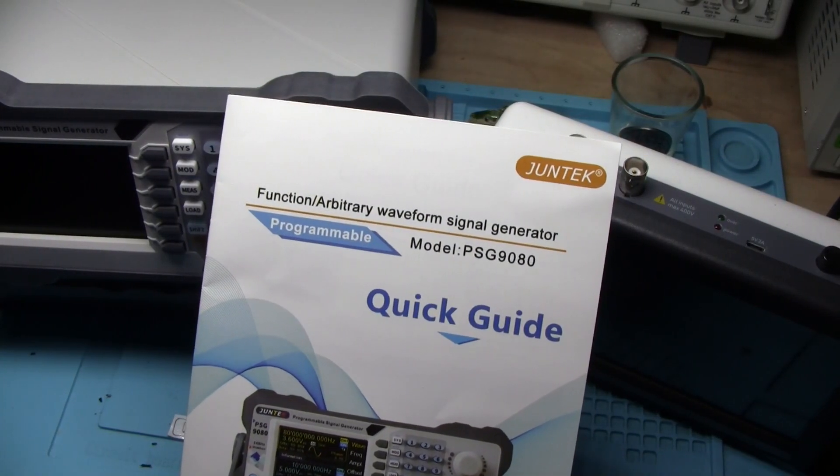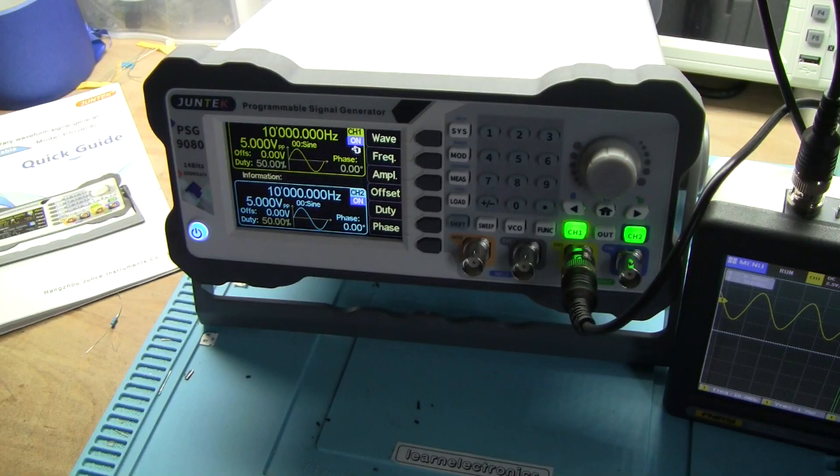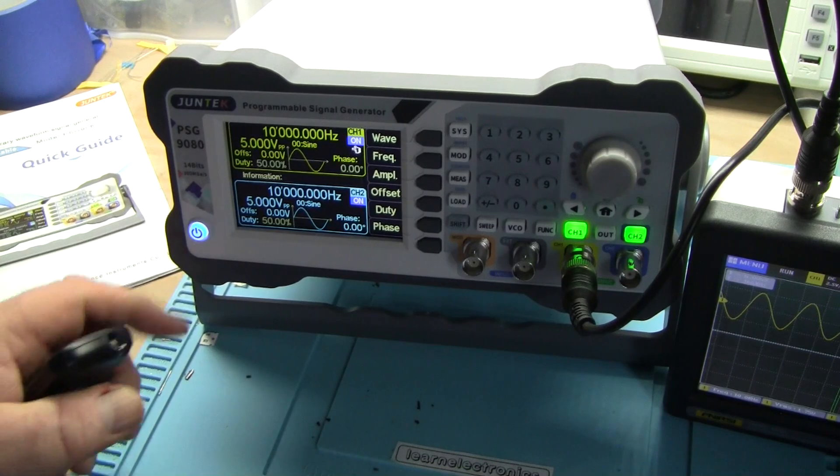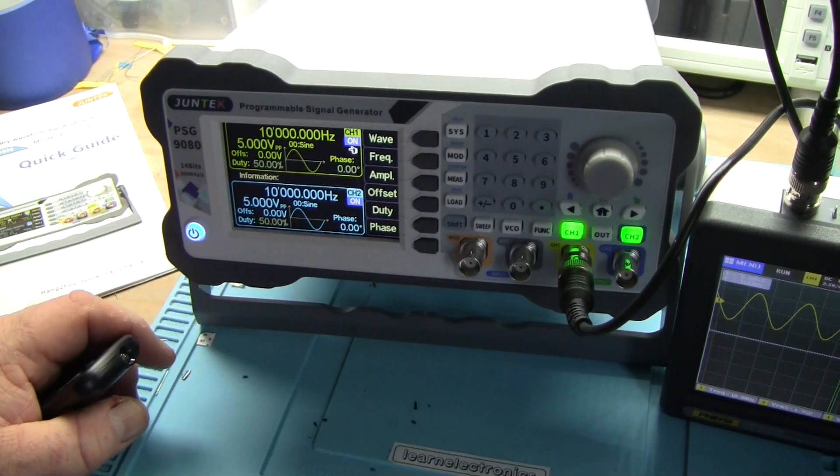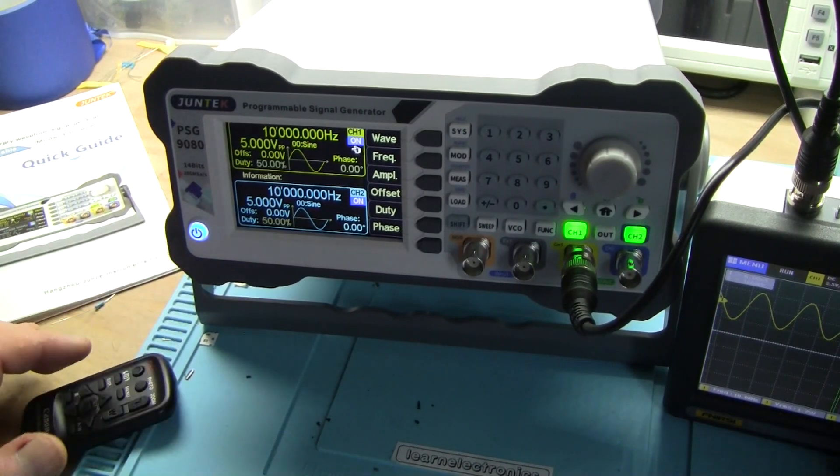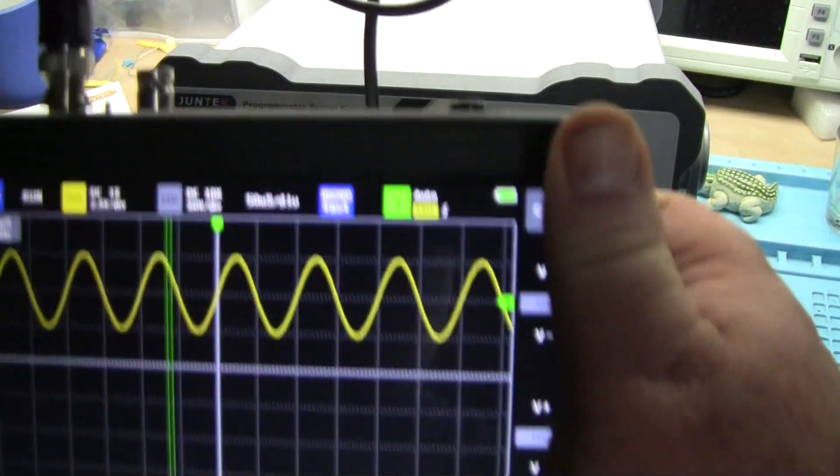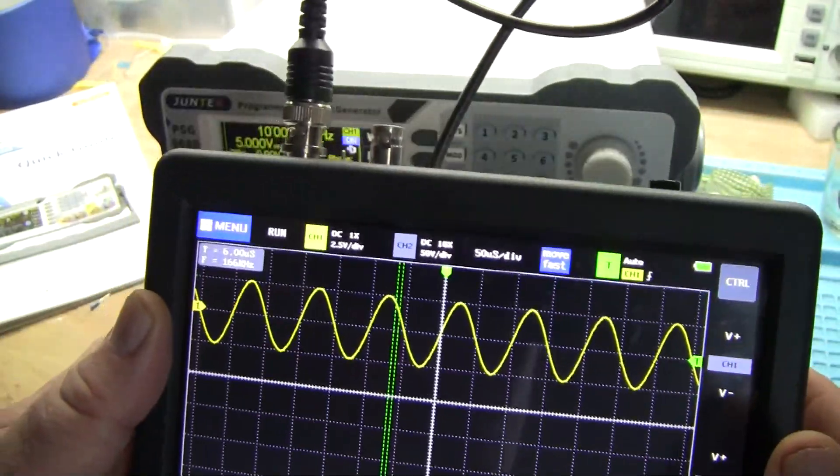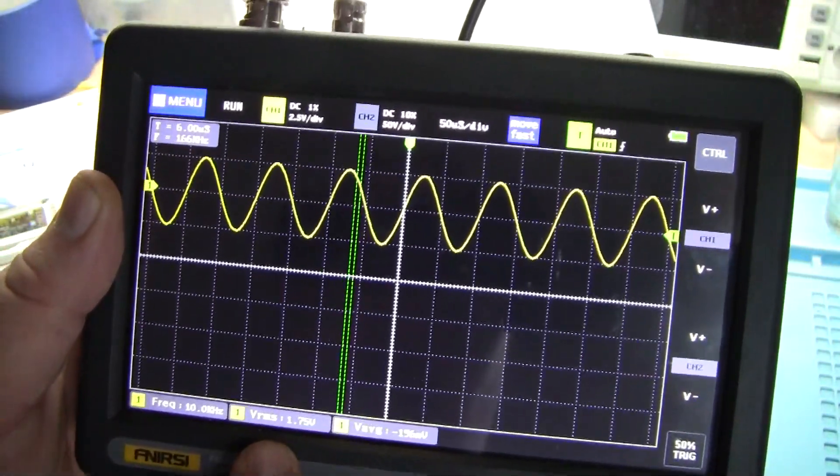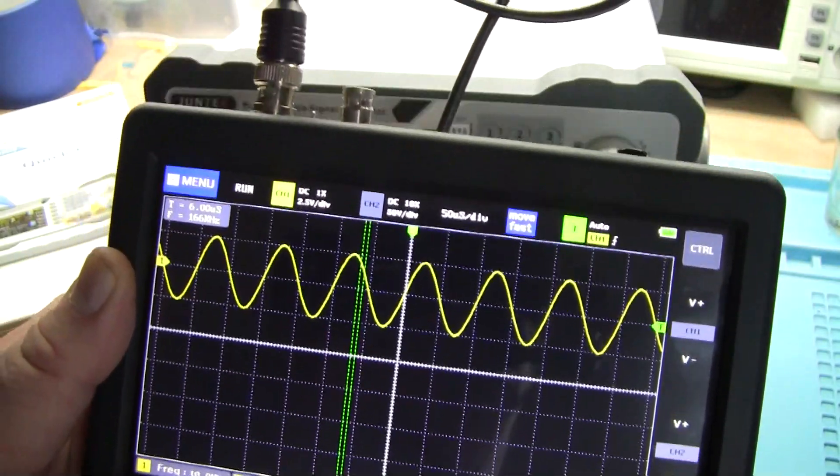Okay, so we've powered it on and it goes right into a 10 kilohertz square wave, which if we take a look here at the oscilloscope, you can see right there: 10 kilohertz, RMS of 1.75 volts.